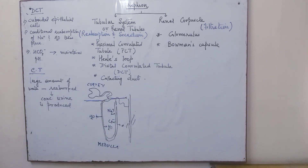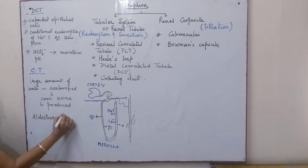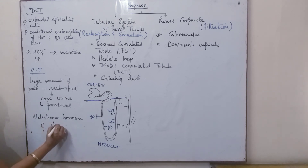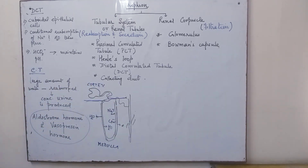The processes are also regulated by two major hormones — aldosterone and vasopressin — which play an important role in maintaining the ionic balance within the kidney. We will be studying about these hormones in the next video.